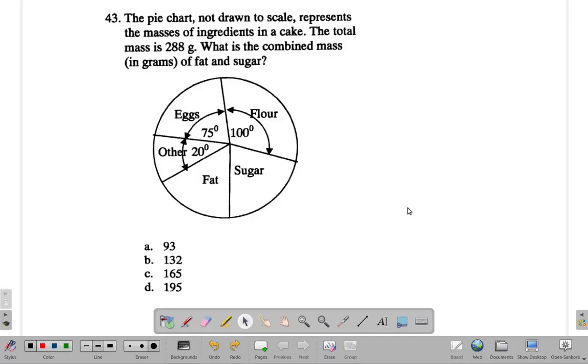Question 43: The pie chart, not drawn to scale, represents the masses of ingredients in a cake. The total mass is 288 grams. What is the combined mass in grams of fat and sugar? See if you can do this within a minute and a half. Pause the video, do it, and come back. All right, what did you get? Let's see.